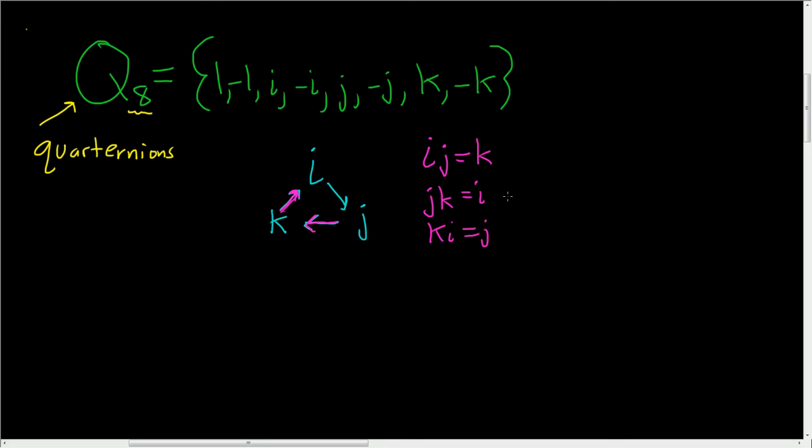Now the interesting thing is if you go backwards, say you go from J to I, so JI, that should give you the opposite of K, or negative K. And if you do IK, we'll get the opposite of J. So IK will be negative J. And lastly, if we do KJ, we should get the opposite of I, so negative I.